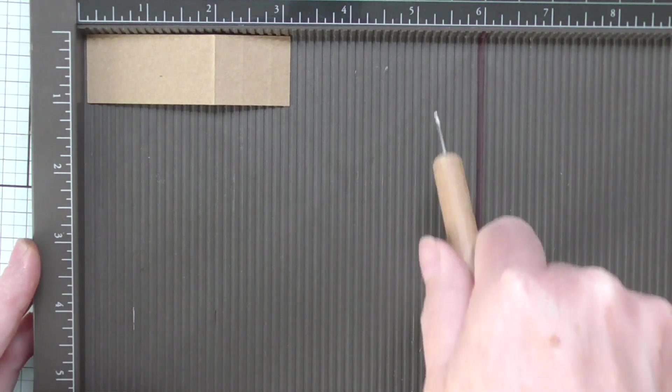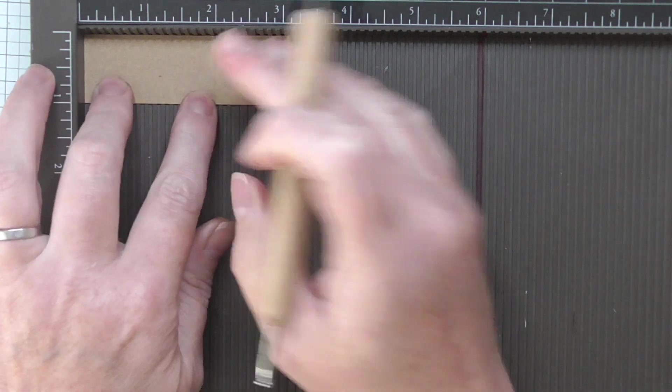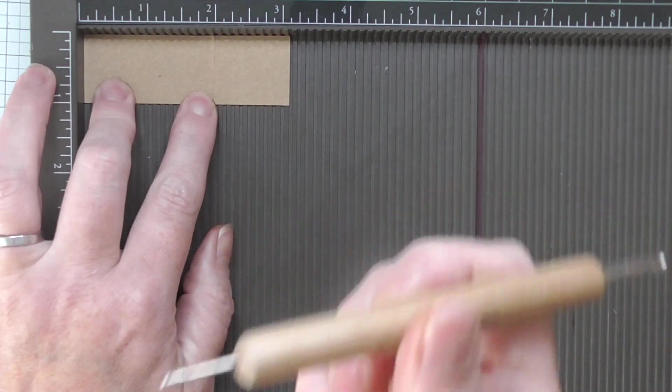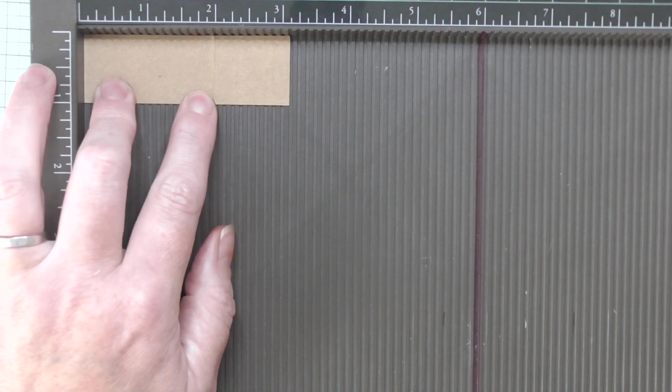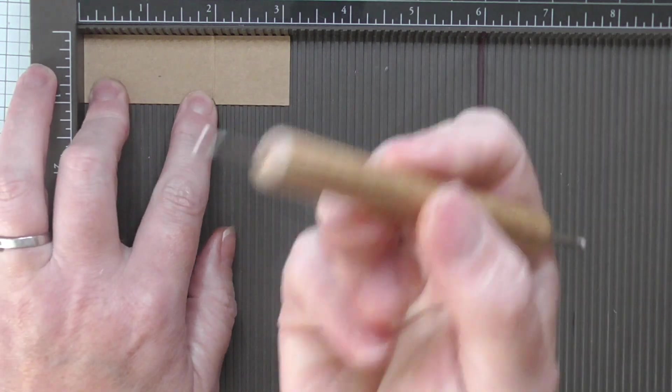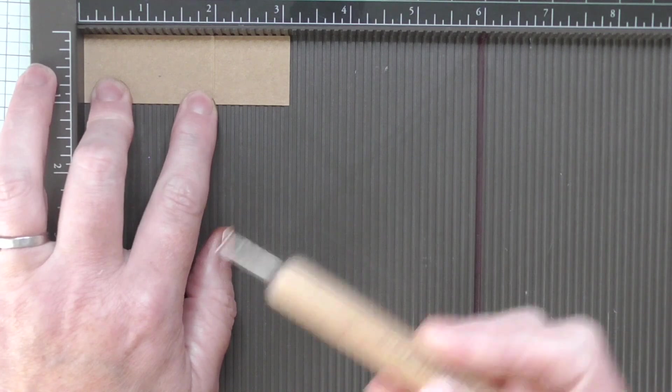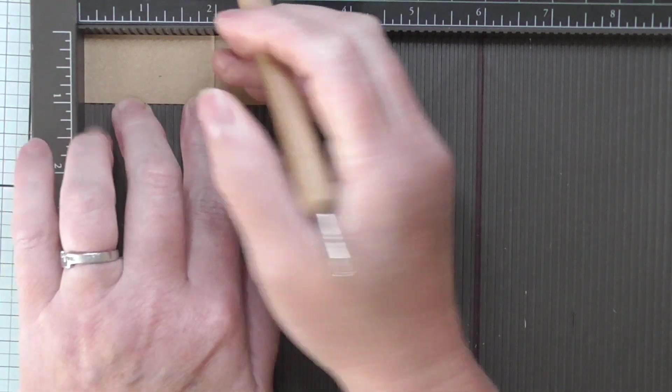Then get yourself a ball tool. If you don't have a scoring board, you can use a ruler. Just make sure you're on a non-slip surface. If you don't have a ball tool, you can use any kind of blunt instrument, the end of a paintbrush or something similar. The smaller the ball tool head, the better result you'll get because it's going to give you smaller score marks.